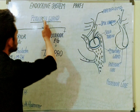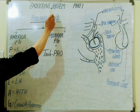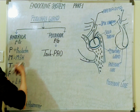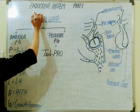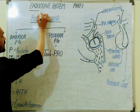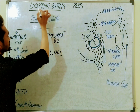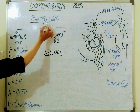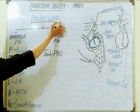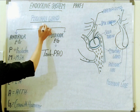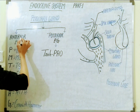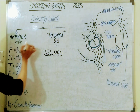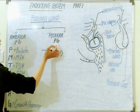Today's session is the endocrine system, which consists of ductless glands that create hormones. The first gland is the pituitary gland, also called the hypophysis. It is divided into two parts: the anterior pituitary gland and the posterior pituitary gland.